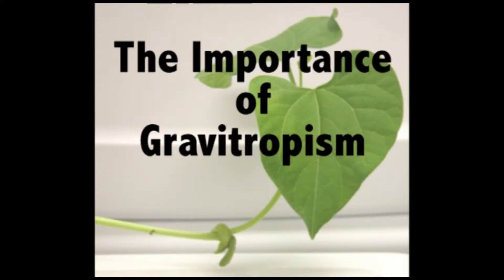For roots, gravitropism is an important phenomenon as it allows the rapid downward curvature of the emerging root. This allows the root to quickly penetrate the soil, thus providing stability and access to nutrients and water to support plant growth.